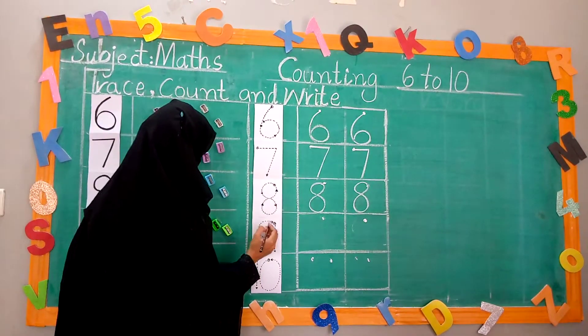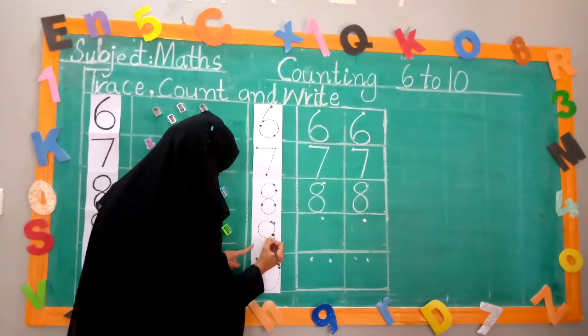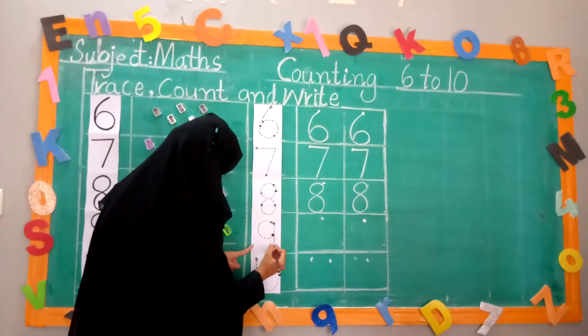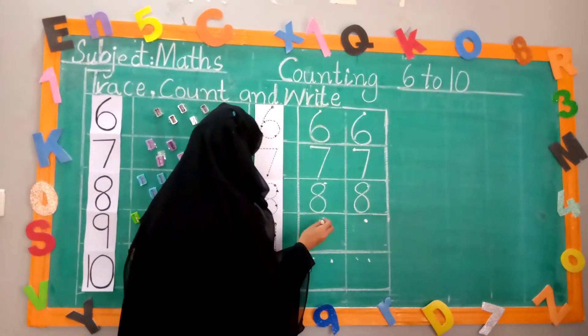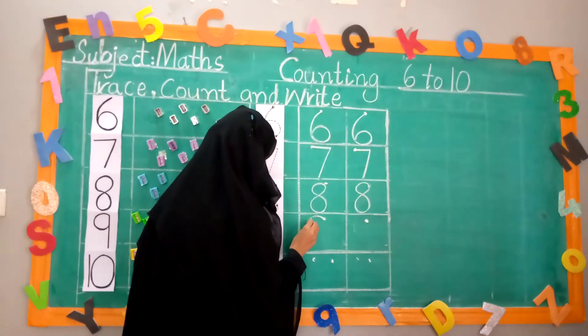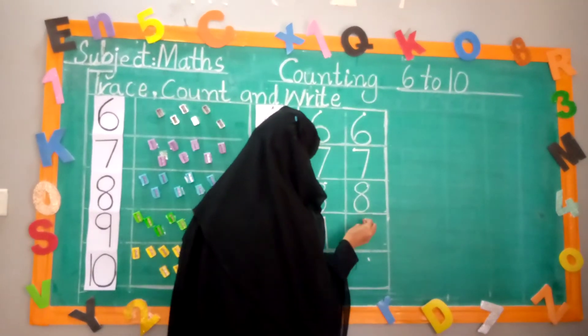Now, we trace 9. 9 is round and must come down. Now, we write 9. Touch the down line. Again, we write 9.